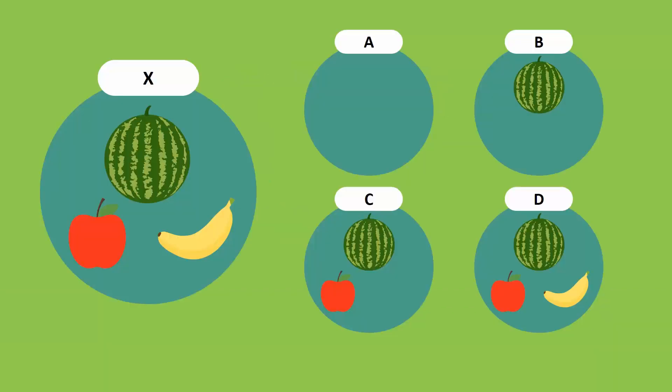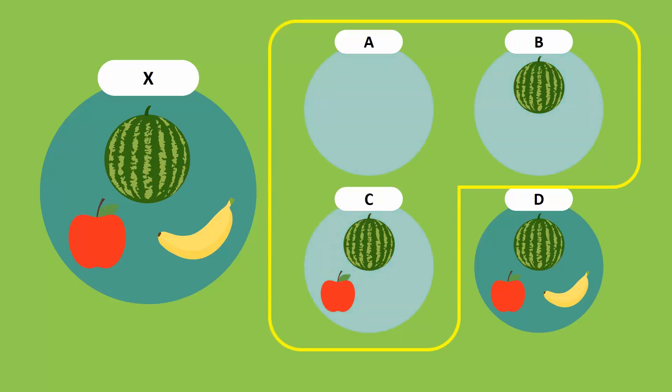Going back to the example, we see that subsets A to C satisfy this condition. Each subset contains some but not all the elements of X, so each one is a proper subset of X.